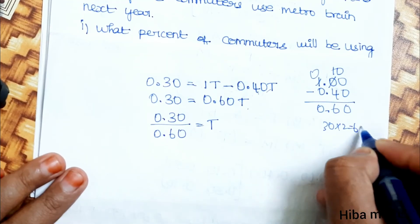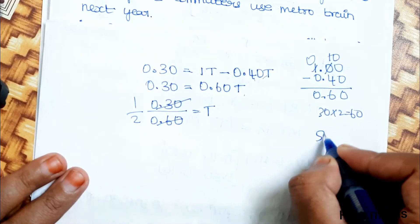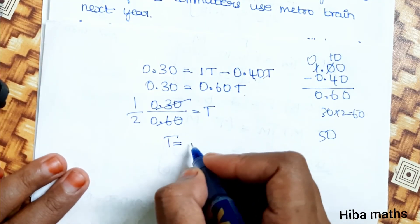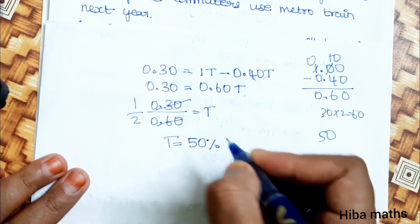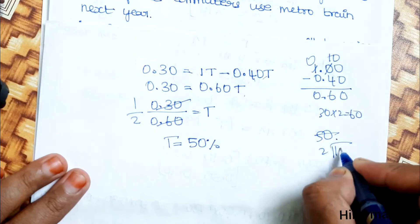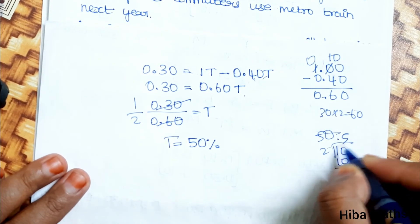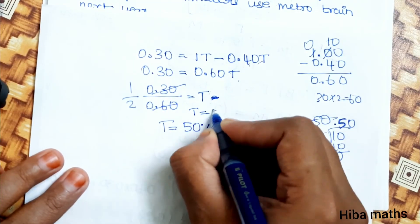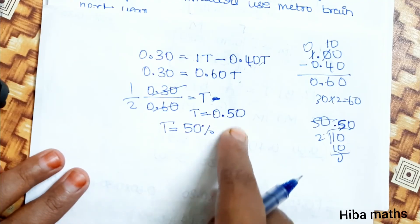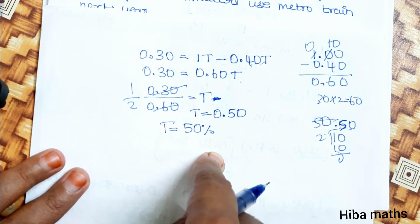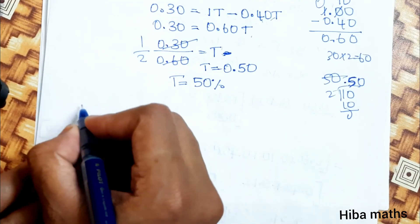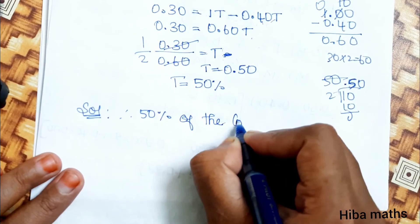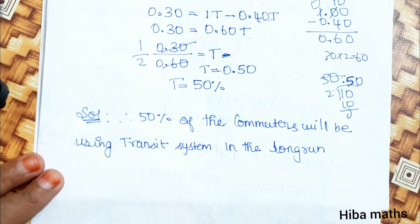Simplifying: 0.30 divided by 0.60 equals 1/2, which is 50%. So t equals 0.50. Therefore, in the long run, 50% of commuters will be using the transit system.